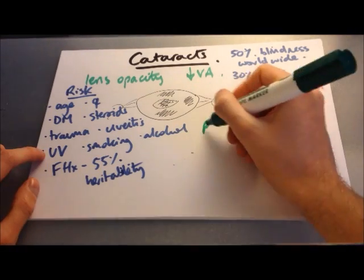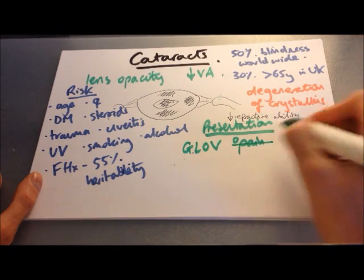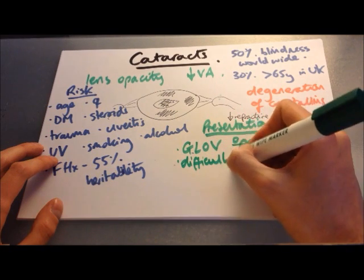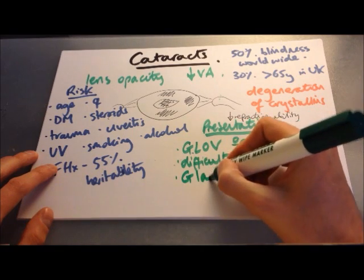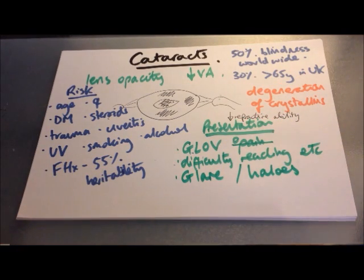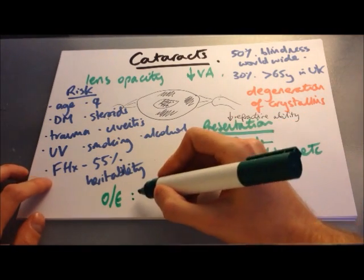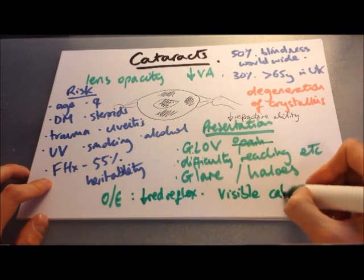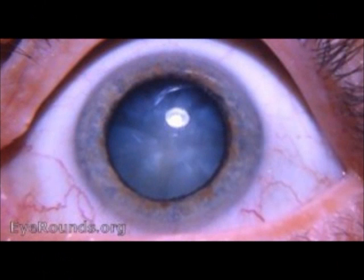The patient will present with a gradual loss of vision with no pain. They may have difficulty reading or watching television. The refractive ability of the lens is compromised, and patients can experience glare and halos around lights. On examination, there will be a reduced red reflex as light is impaired from reaching the retina. On slit lamp examination, the cataract will be visible. Photographs show quite advanced cataracts in the lens with reduced red reflex.